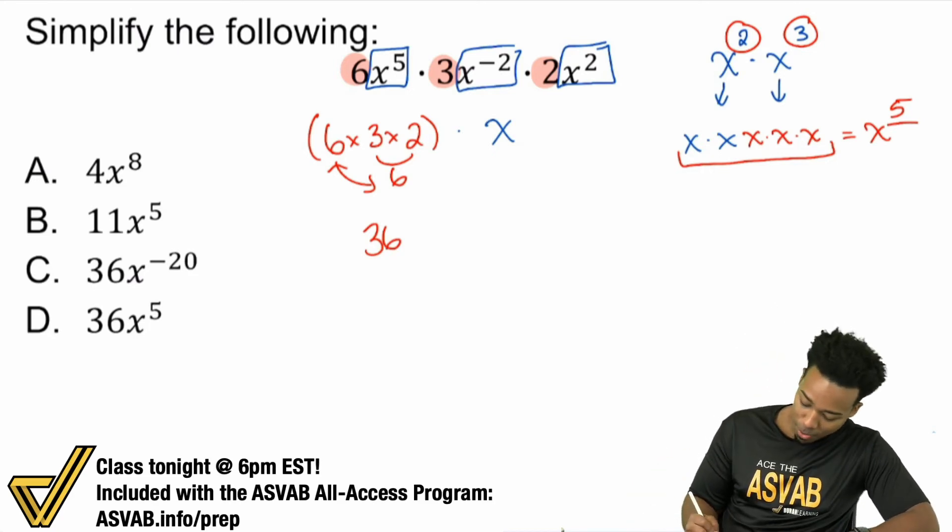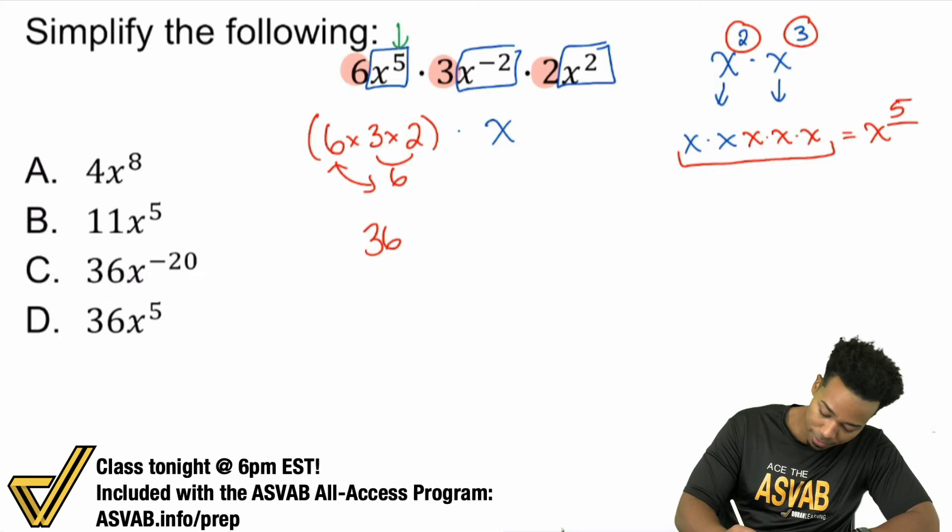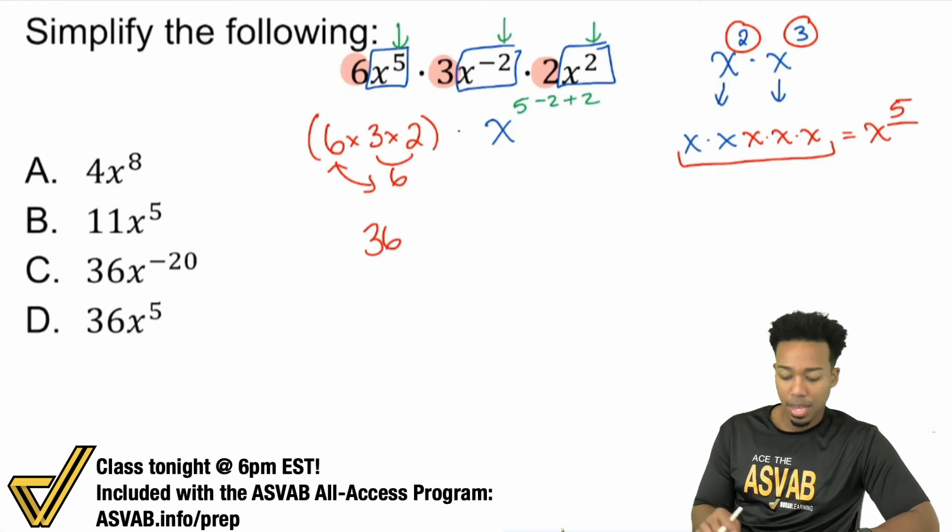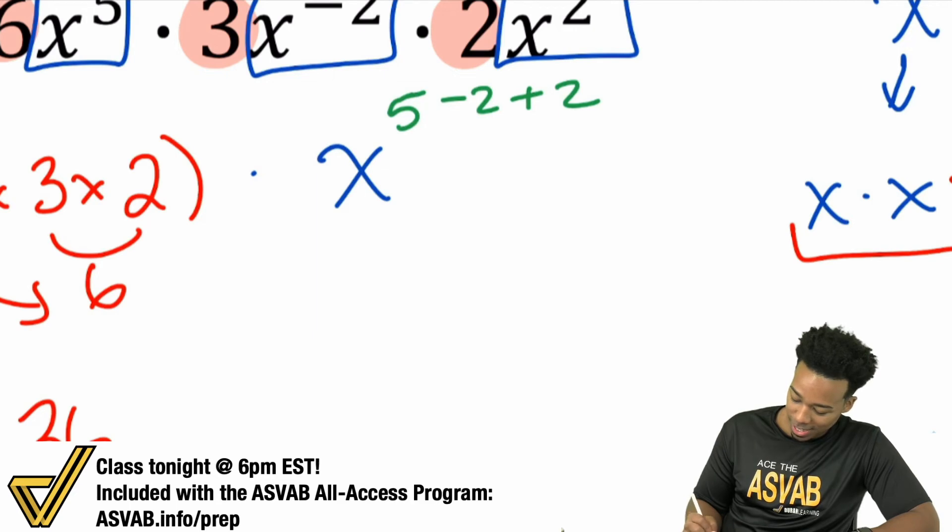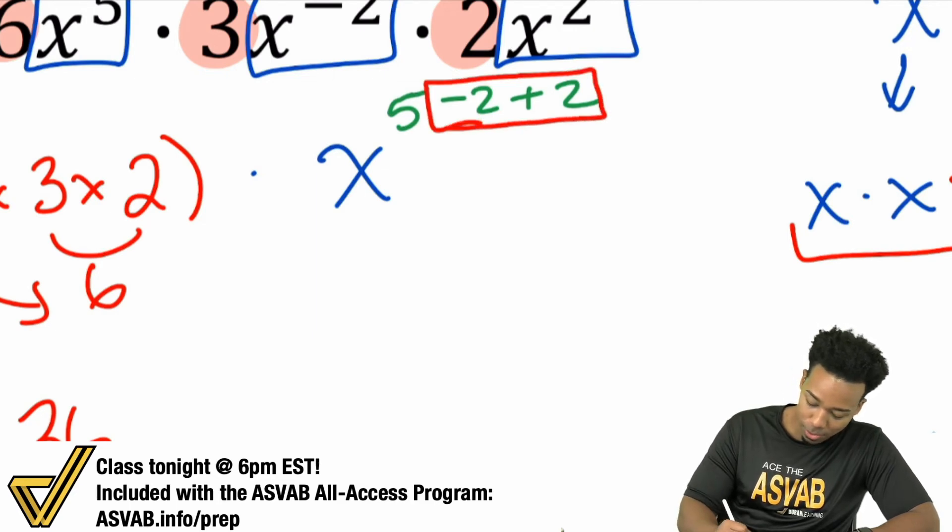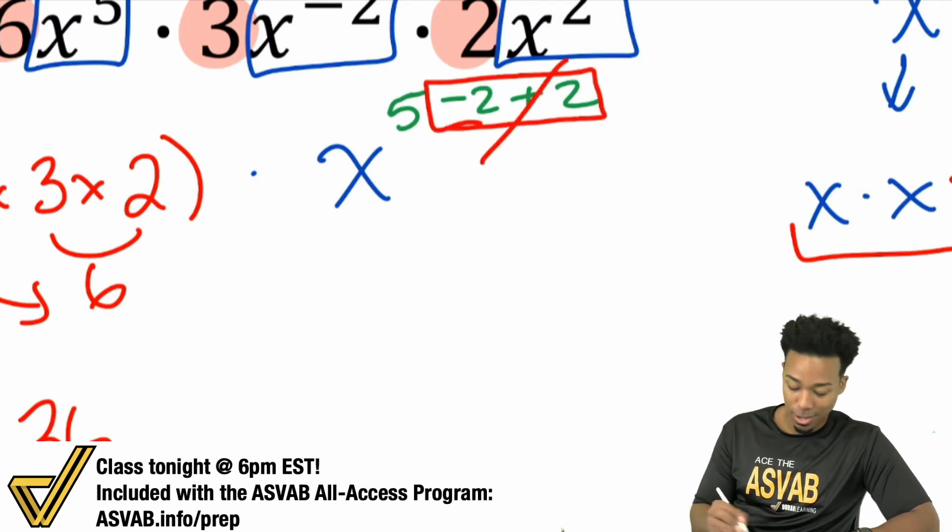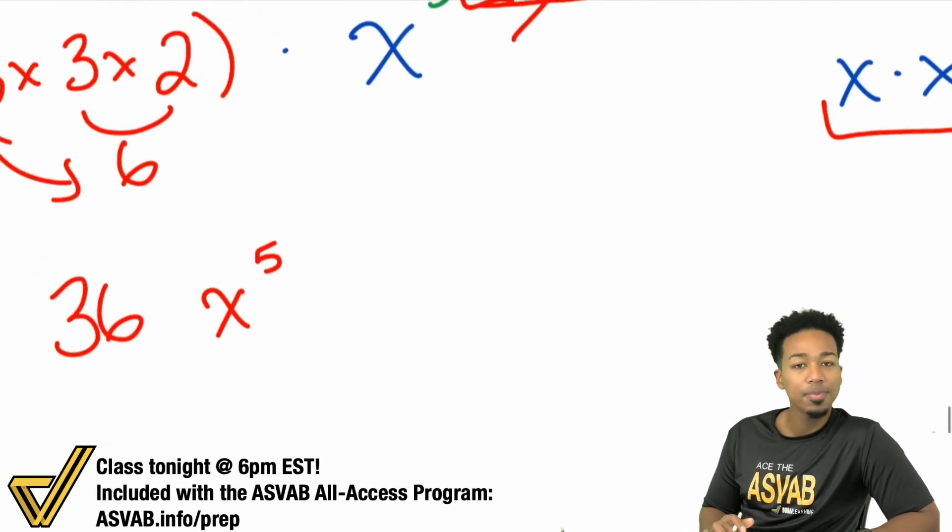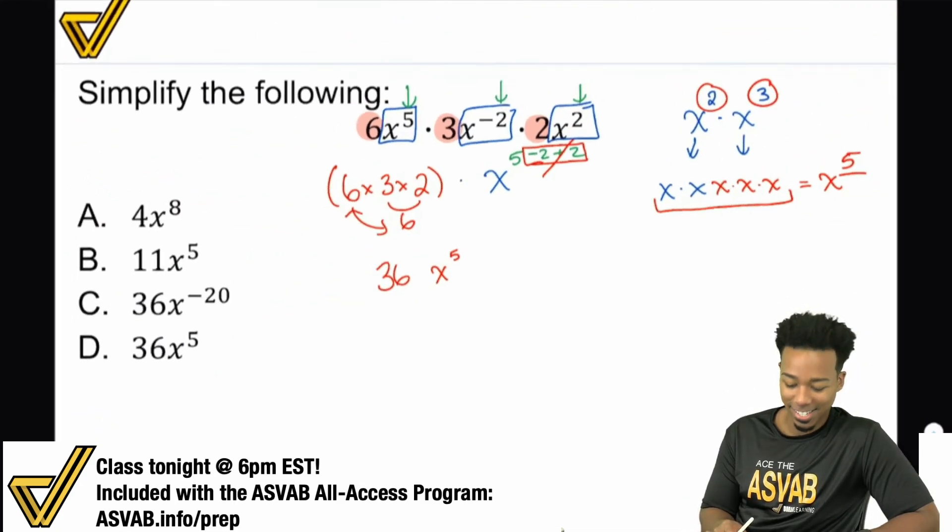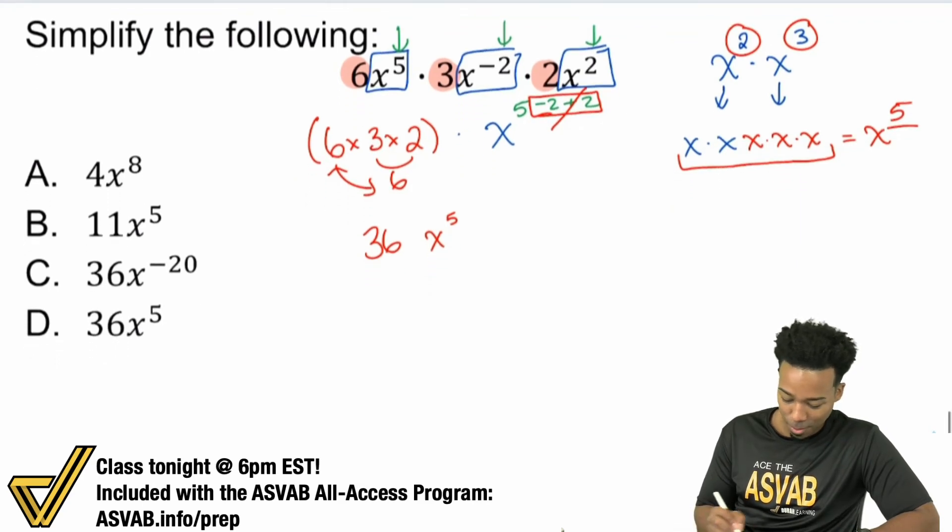What we have here is 5 minus 2 plus 2. And once we have it like that, we are good. Because once you notice that minus 2 and plus 2 cancels out, you're left with just x to the power of 5. So we have 36x to the power of 5, and that will be our answer.